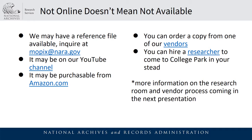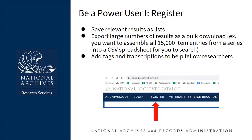For the vendor order process and once we reopen, you can hire a researcher to come to College Park for you or come here in person to view and copy films not available online. The catalog is fully searchable without registering, but registration is useful if you're going to do sustained or complex research. It allows you to save relevant results into lists and export a large number of results as a bulk download.